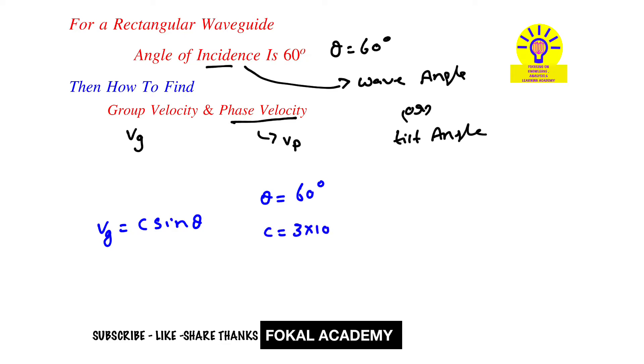Substitute this data in the equation: 3 times 10 to the power 8 times sine 60. By simplifying this, we get 2.6 times 10 to the power 8 meters per second. This is the group velocity for the given problem.